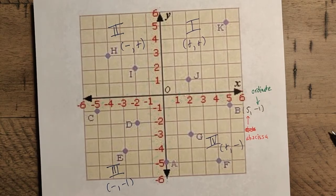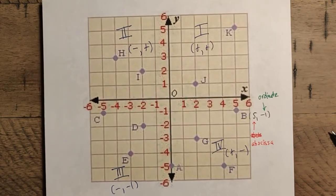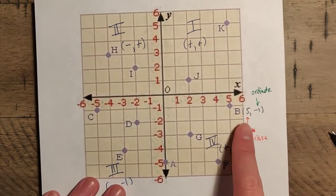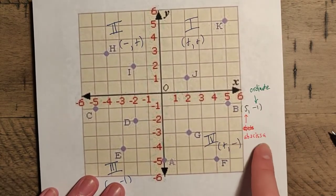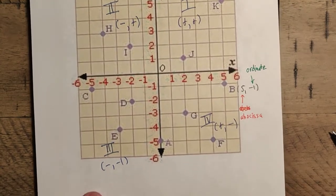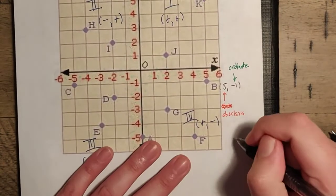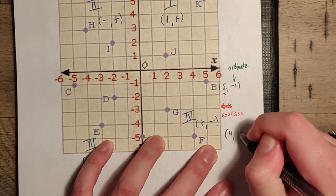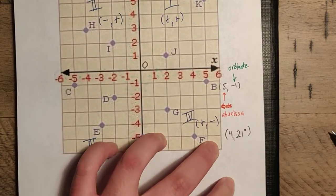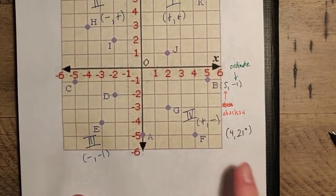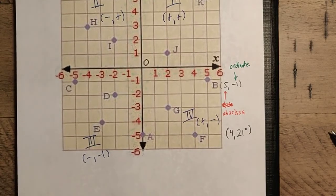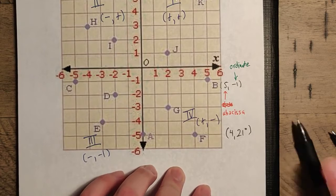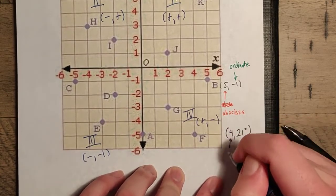In particular, the other major coordinate system in two dimensions is something known as the polar system, where instead of giving an abscissa and an ordinate, instead of giving something like this here, two things where this left, right, and up, down, they give you something else here. So, for example, something like, say, 4 comma 21 degrees, where in this situation, this is something completely different. This is a new type of coordinate system where you have 4 representing here a distance.